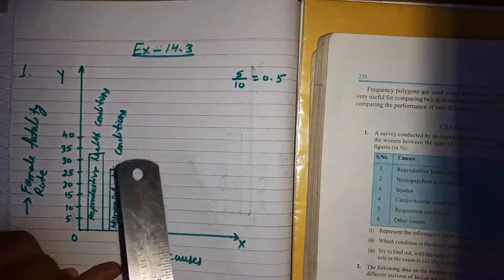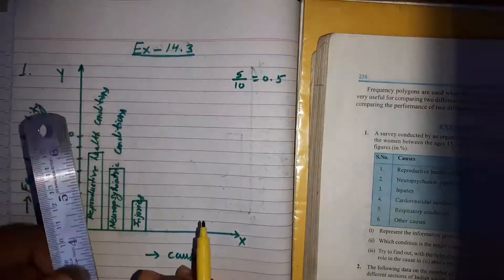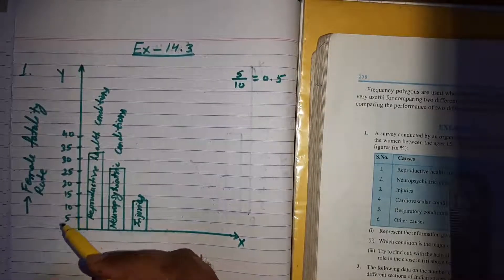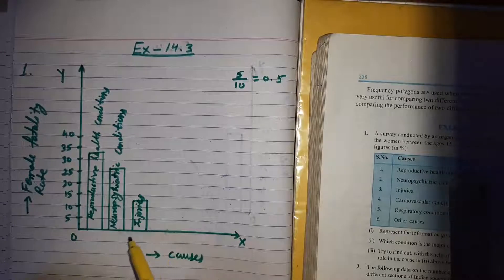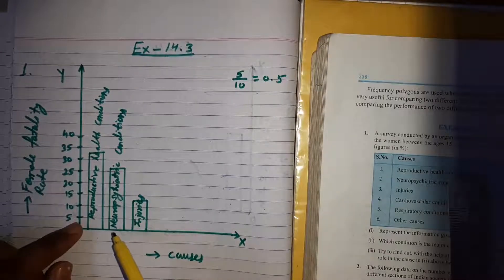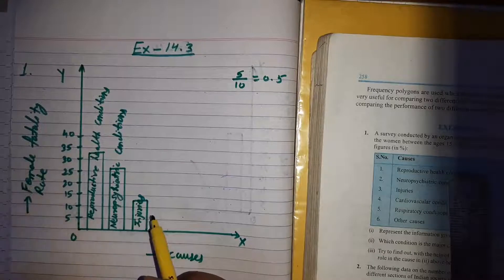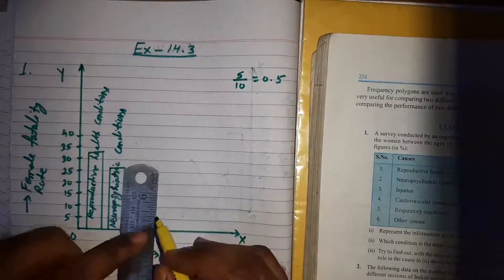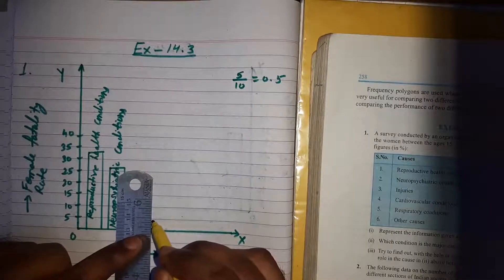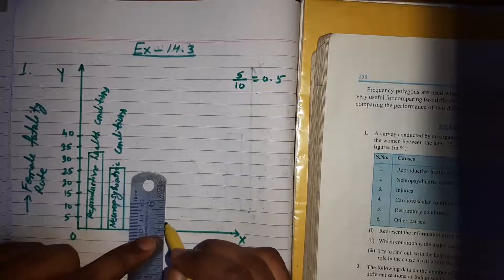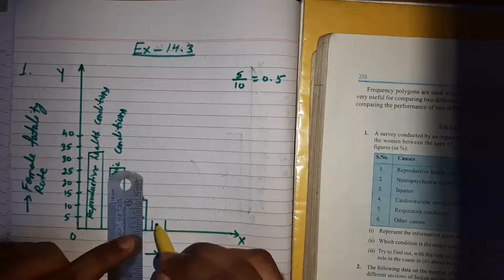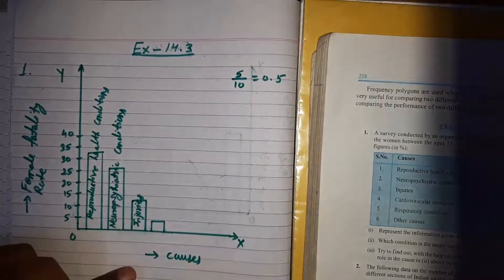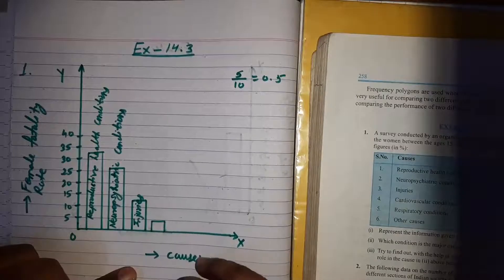The next cause is cardiovascular condition with frequency 4.3. It lies between 0 and 5. We cover the 9th line, giving 4.5, which is nearly equal to 4.3. We draw the rectangle bar for cardiovascular condition at the 9th line between 0 and 5.